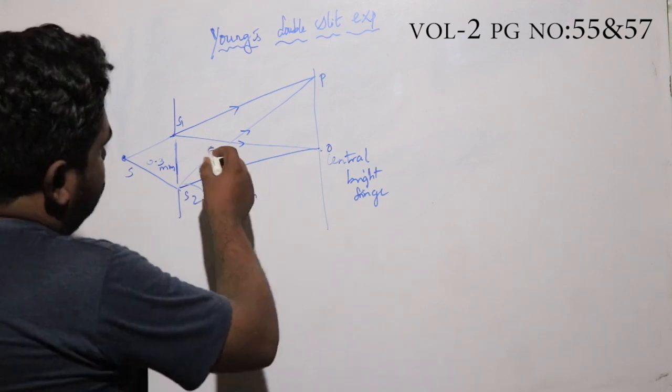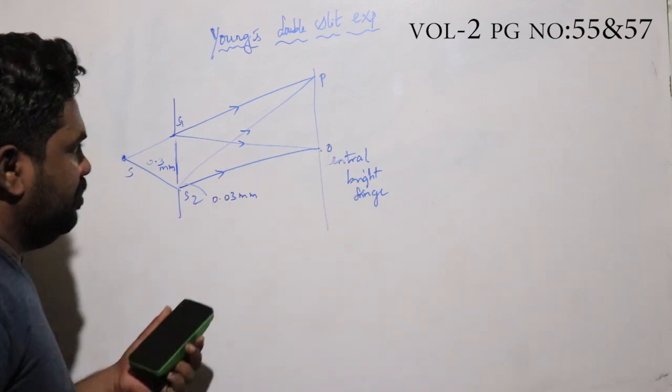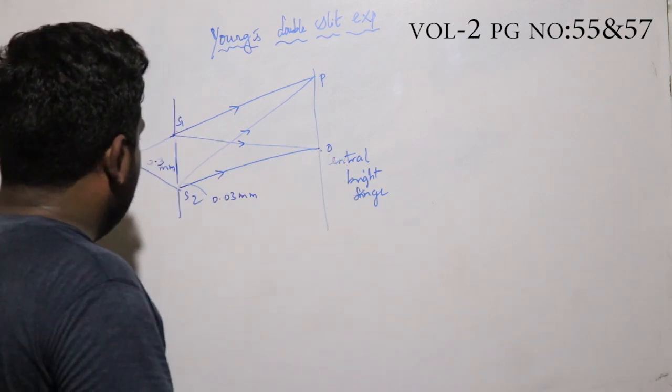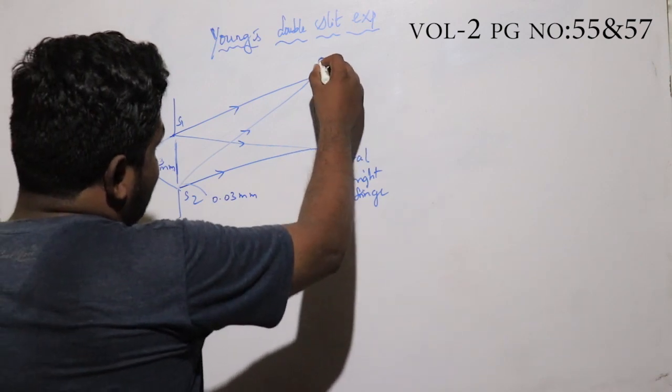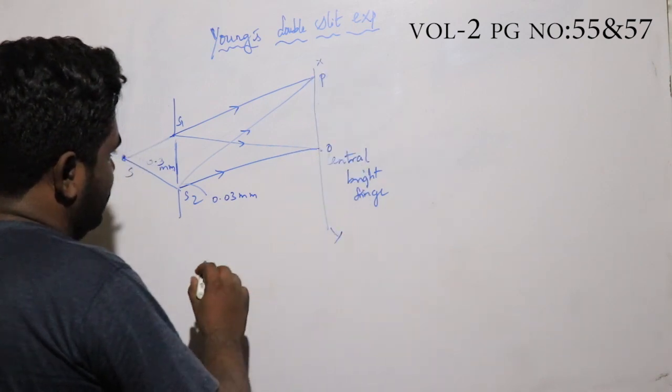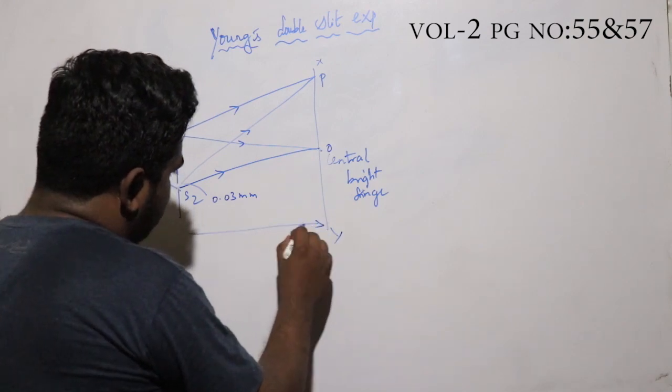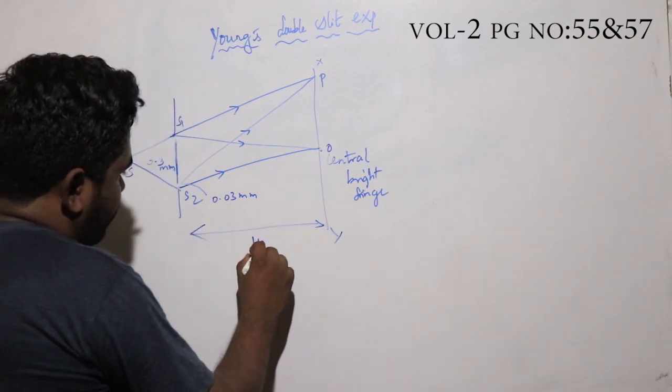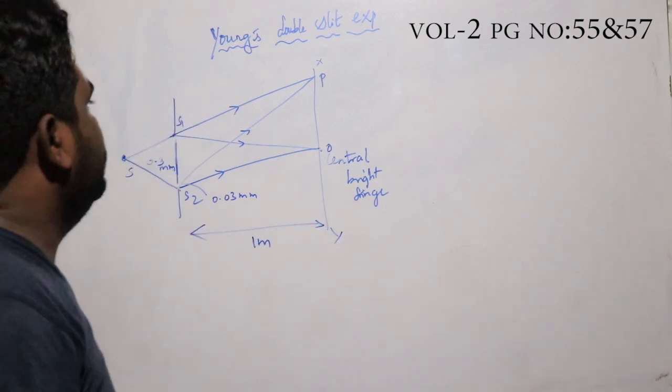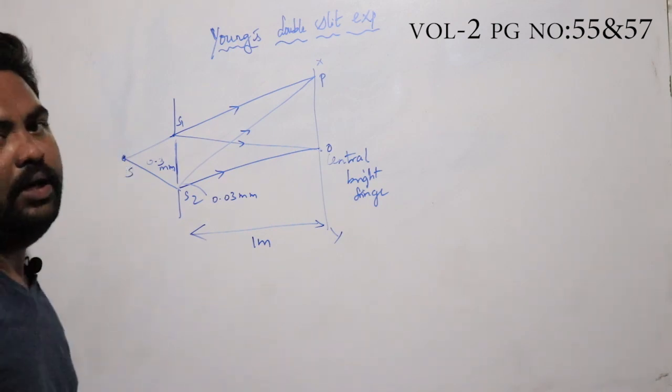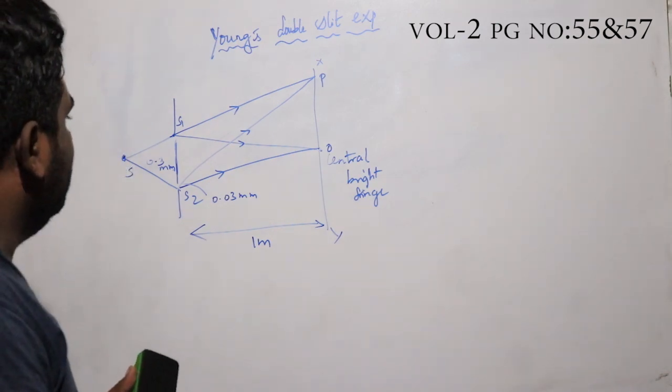When the light meets at the central point, it is constructive interference. This screen is placed 1 meter from the slits. This is how we make the coherent sources.